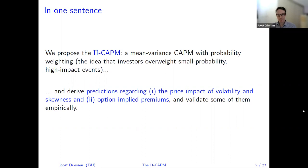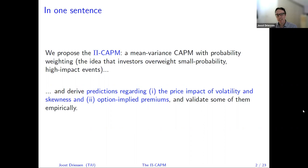The PI is typically the symbol used in decision science for decision weights or probability weights. The idea of the paper is to develop, first of all, a theoretical model — a CAPM with this probability weighting — and to generate a whole range of new predictions on the pricing of volatility, skewness, and options. We will also validate especially some of the option implications empirically.